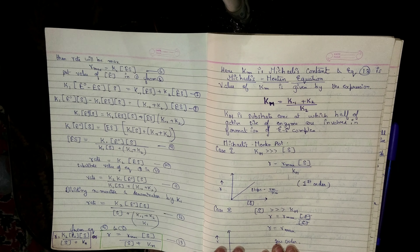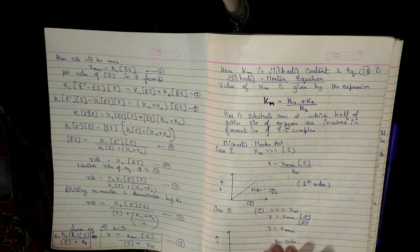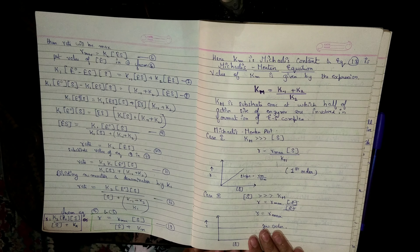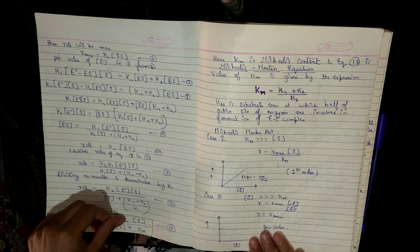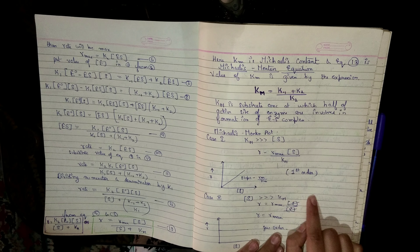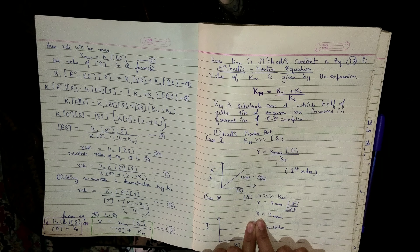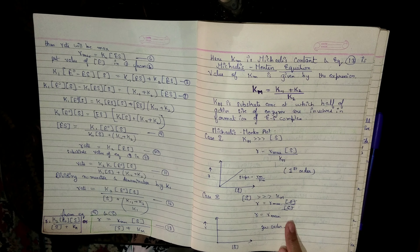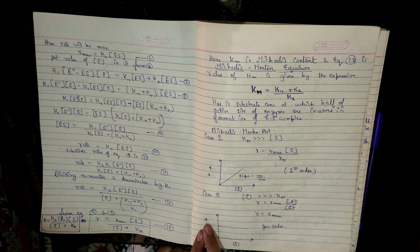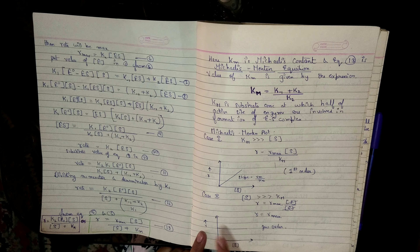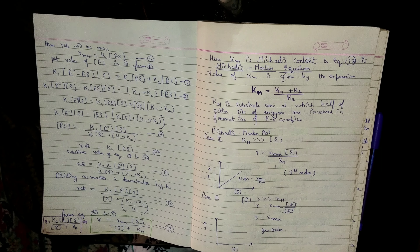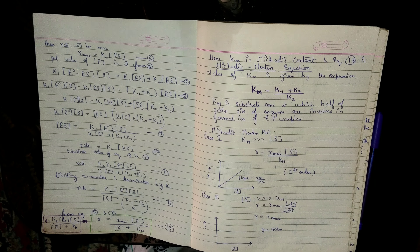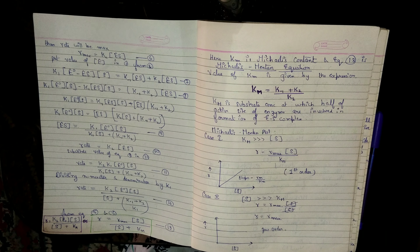Case 2: when KM is much smaller than [S] (substrate concentration is very high), KM is negligible. The equation simplifies to r = Rmax·[S]/[S] = Rmax. Plotting rate vs. substrate concentration gives a constant horizontal line, representing zero-order kinetics. That's all about the Michaelis-Menten equation — please like and subscribe to my YouTube channel.